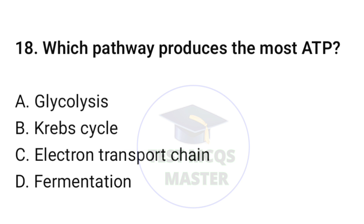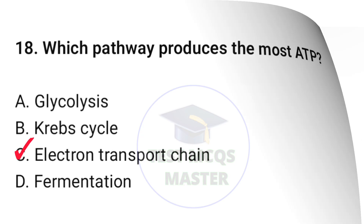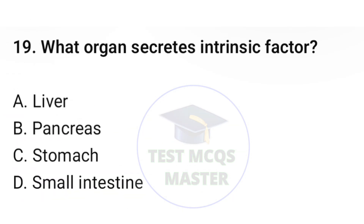Question number eighteen: which pathway produces the most ATP? The correct option is C, electron transport chain. Question number nineteen: what organ secretes intrinsic factor? The correct option is C, stomach.